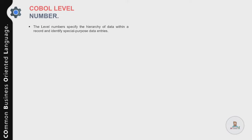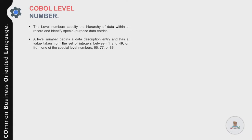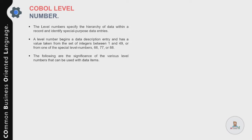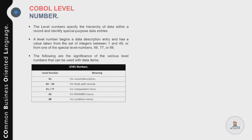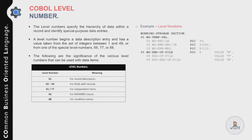Now let's talk about level numbers in COBOL. Level numbers specify the hierarchy of data within a record and identify special-purpose data entries. A level number begins a data description entry and has a value from 1 to 49, or from the special level numbers 66, 77, or 88. Level 01 is used to define a record description. Level numbers 02 to 49 are used to define fields within the record. Level 77 is used for independent items.